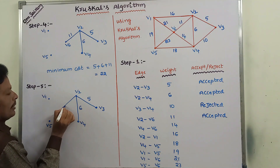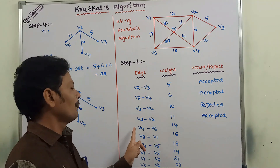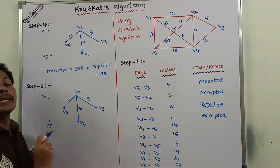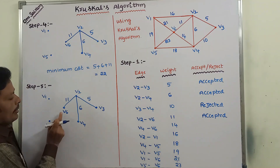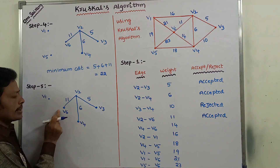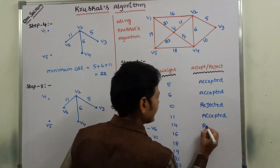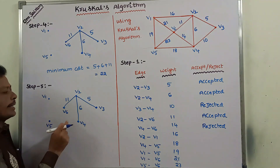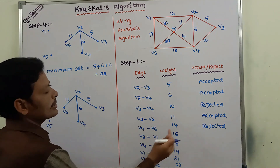Next, the minimum weight edge is V4 to V6, weight 11. After adding this edge V4 to V6, it can form a cycle: V4 to V6, V6 to V2, V2 to V4. So this edge is rejected.